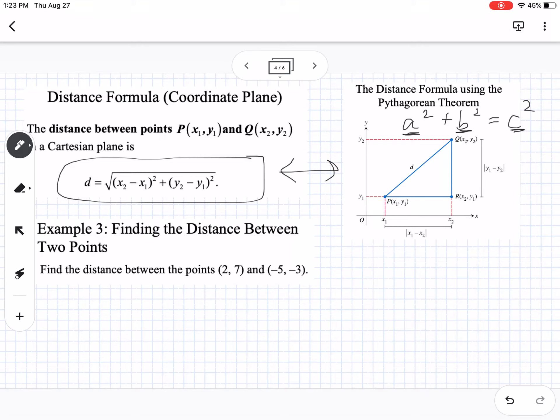Okay. So, and you can imagine like if you're on the graph, rather than doing the distance formula, it'd be probably easier just to turn it into a right triangle and use the Pythagorean theorem. Okay. So our example is to find the distance between the points two, seven, and negative five, negative three.